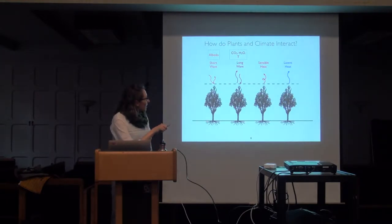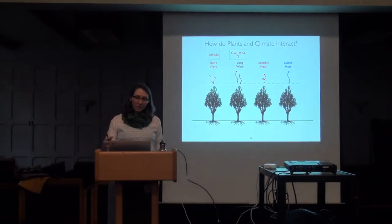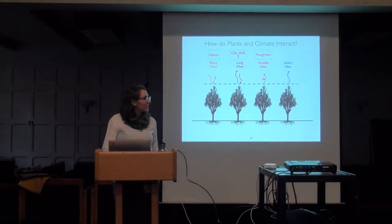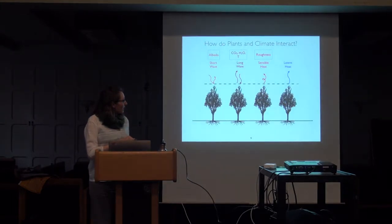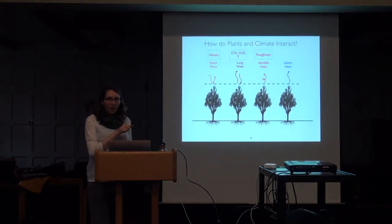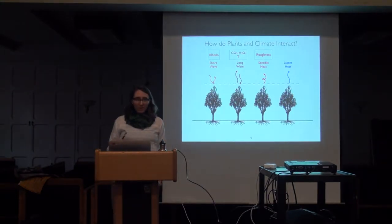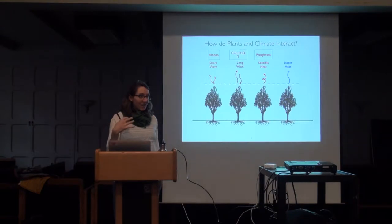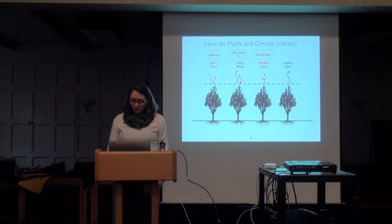The turbulent heat fluxes are energy fluxes dictated by turbulent air movement. Sensible heat is influenced by the temperature gradient between the surface and atmosphere, but also by how rough the surface is — taller vegetation creates a rougher surface and shorter vegetation creates a smoother surface, affecting both turbulent flux terms.